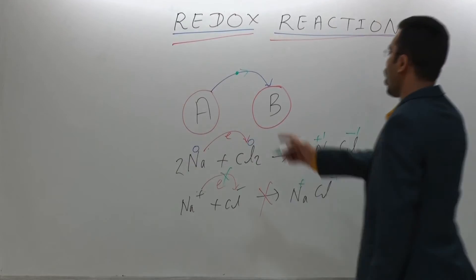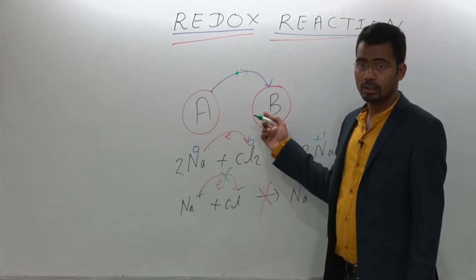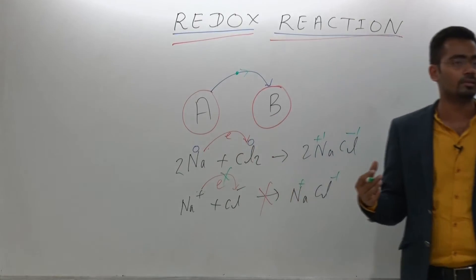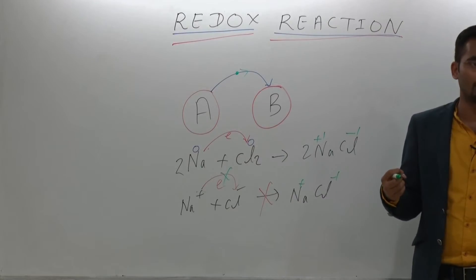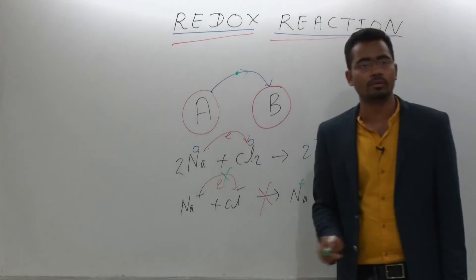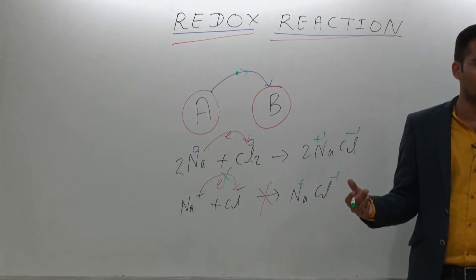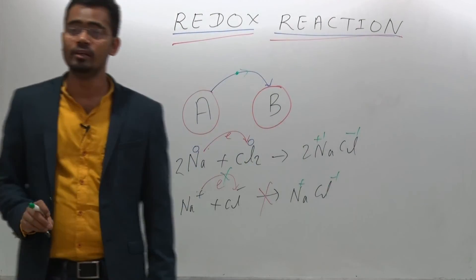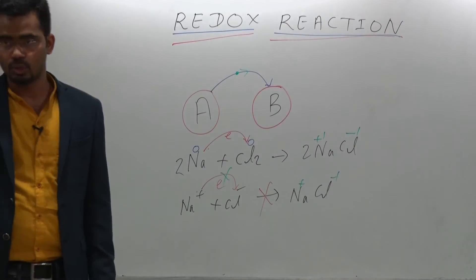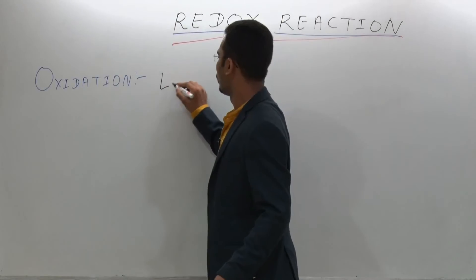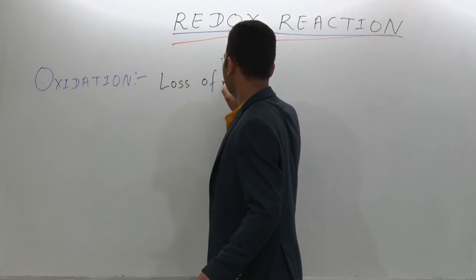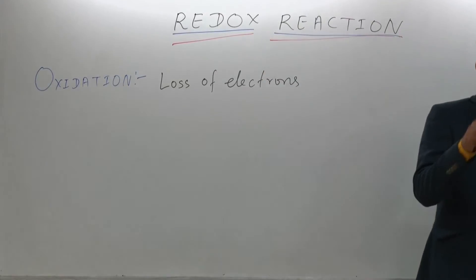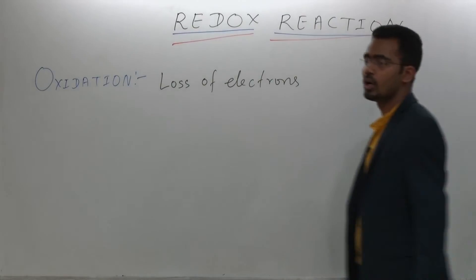If there is a movement of electrons, the atom which gains the electrons is reduced, and the atom which loses the electron is oxidized. There are two processes of redox reaction: one is called oxidation and the other is called reduction. Write down: loss of electrons is called oxidation.